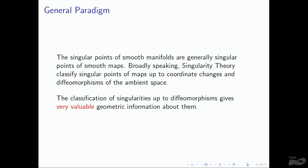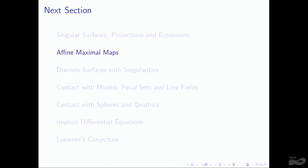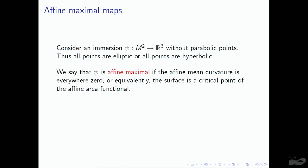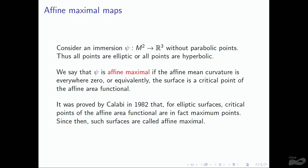Now I will talk about a specific topic: affine-maximal maps. An immersion of a surface in R³ without parabolic points — so all points are elliptic or hyperbolic — is called affine-maximal if the affine mean curvature is everywhere zero, or equivalently, the surface is a critical point of the affine area functional. It was proved in 1982 that elliptic surfaces that are critical points of the affine area functional are in fact maximum points, and since then, these surfaces, which were originally called affine-minimal, are now called affine-maximal.